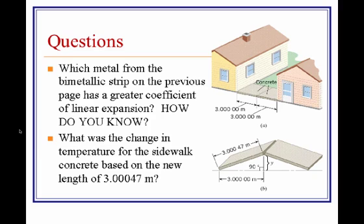Second question: What was the change in temperature for the sidewalk concrete based on the new length of 3.00047 meters after it was heated during the day? Here is the concrete between two buildings. Each slab has a length of 3.000 meters. During the day, it's heated up over some change in temperature and changes to a new length, which is given here, and therefore buckles up. This buckling is due to thermal expansion, and you can calculate the height that it buckles upward.